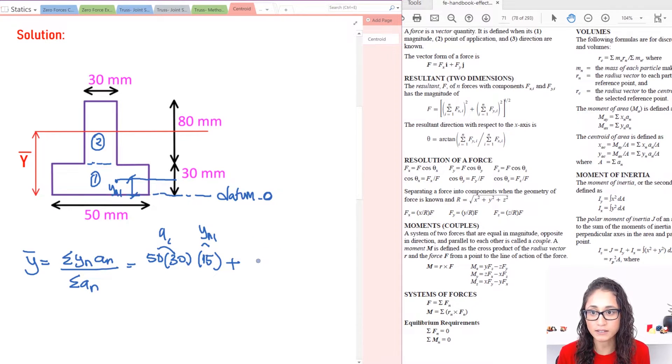So the second part is, so we have 30 times 80, which is my area, 30 times 80. It's a rectangle. And then my Yn, this one is a little bit tricky because the centroid of part 2 is 40, right? You just half of this, half of 80. So that's going to be 40.